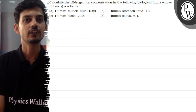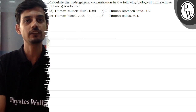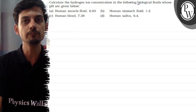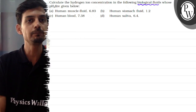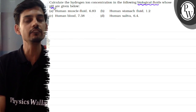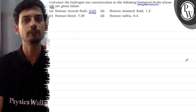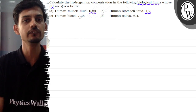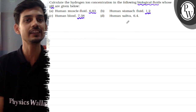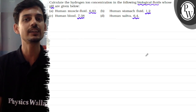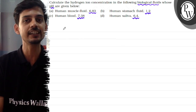Hello, the question says: calculate the hydrogen ion concentration in the following biological fluids whose pH are given. We are given four parts — human muscle fluid with pH 6.83, human stomach fluid with pH 1.2, human blood with pH 7.38, and human saliva with pH 6.4.